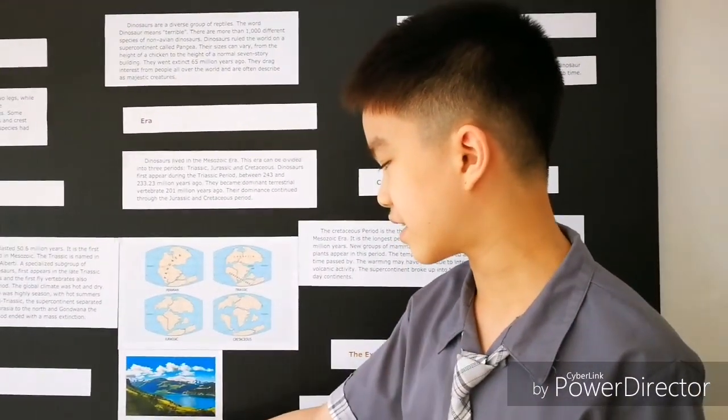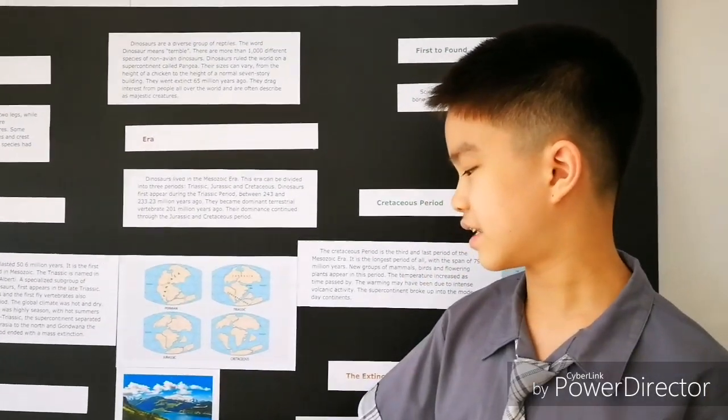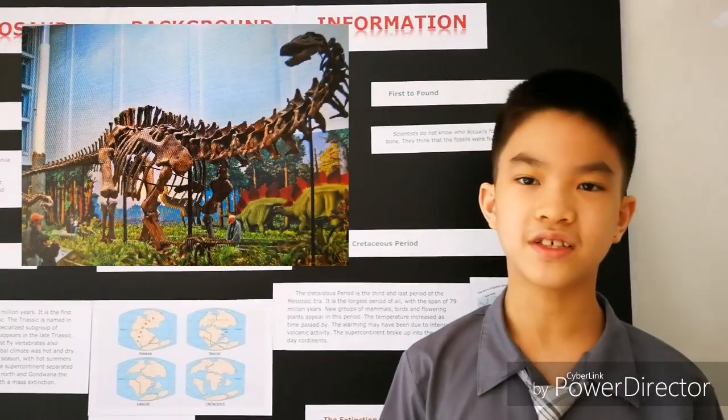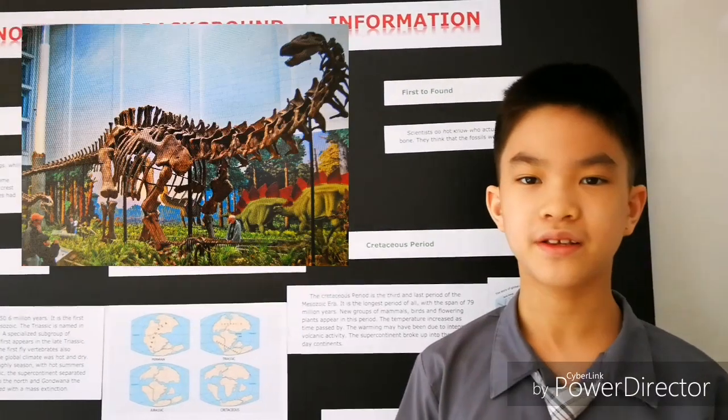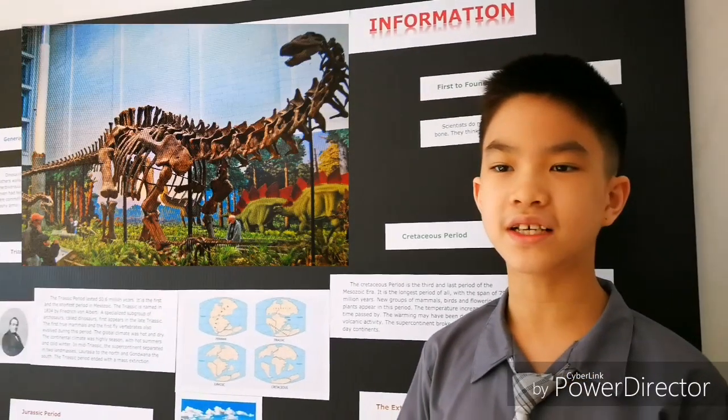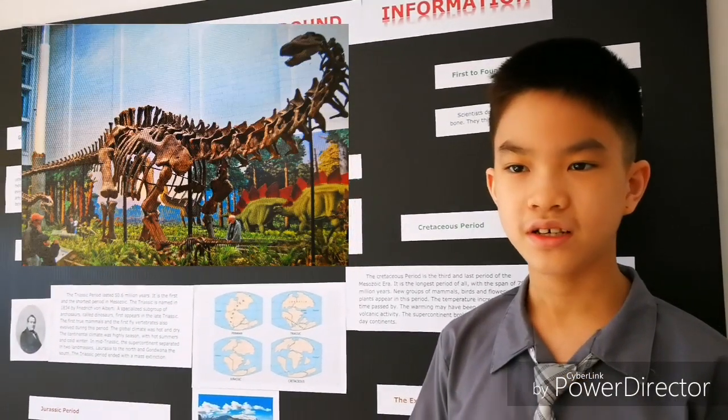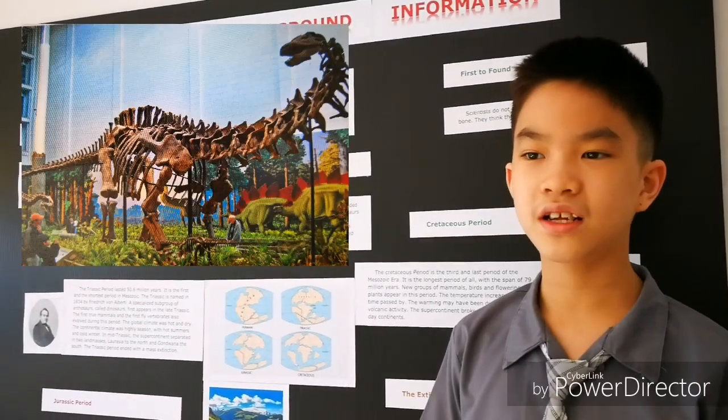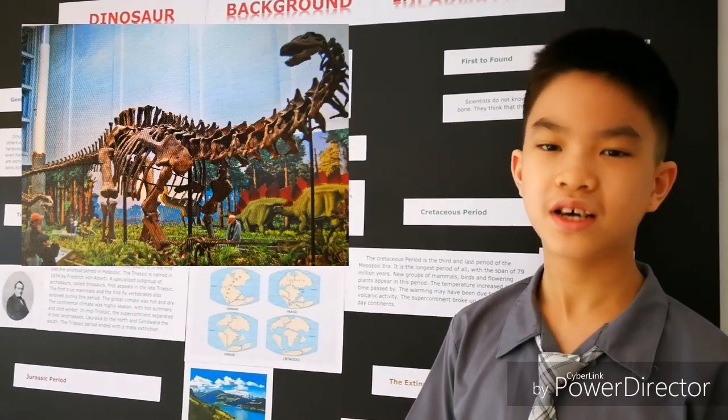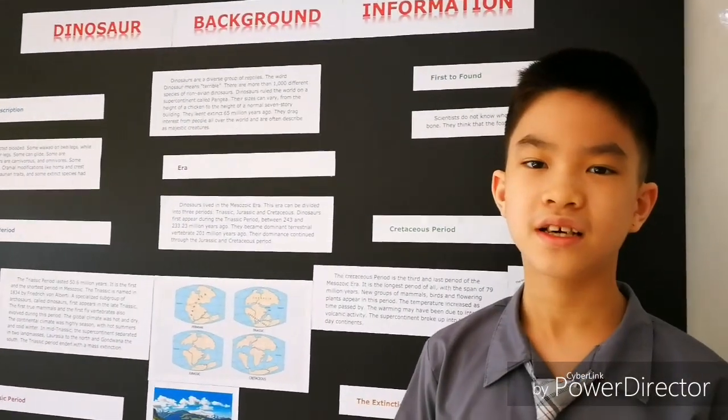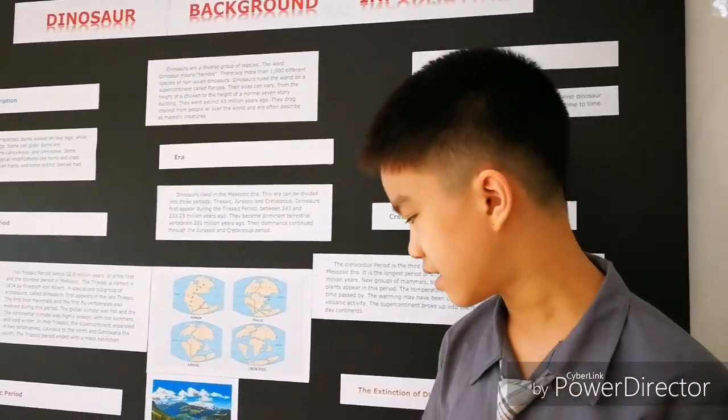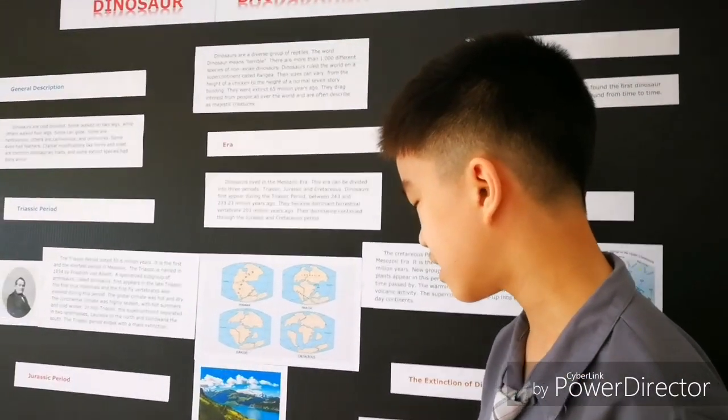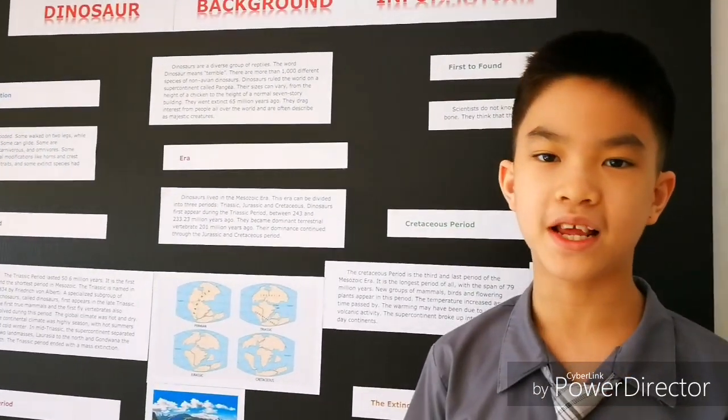The Jurassic period is 56 million years. It is the second longest period. It is also known as the age of reptiles. It has hot, humid global climate and has a lot of rainforest. It is named after the Jura Mountains in the European Alps, where the limestone strata was first identified.